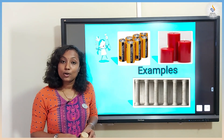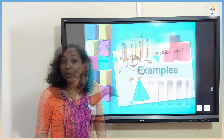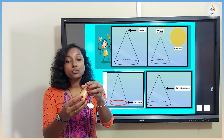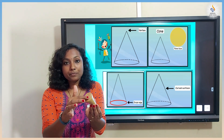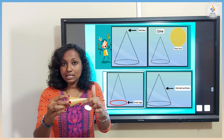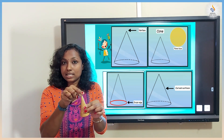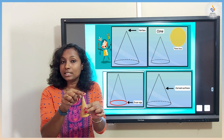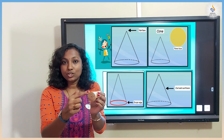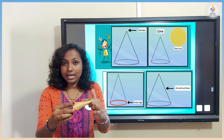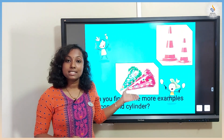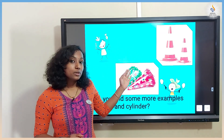Shall we move on to the next 3D shape — that is cone. What is a cone? A cone has one flat face, one curved edge, one curved face, and one vertex. Shall we repeat together? One flat face, one curved edge, one curved face, and one corner.